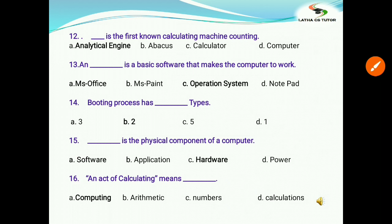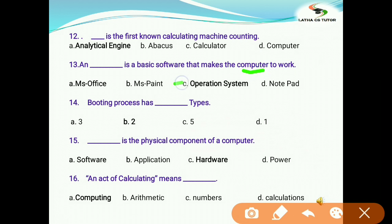Question 13: Blank is the basic software that makes the computer work. Options: a) MS Office, b) MS Paint, c) operating system, d) Notepad. The question is basic software to make the computer work, so it is operating system. It is the main software. Question 14: Booting process has how many types? The answer is 2. As we know, booting consists of cold booting and warm booting, two types. Question 15: Blank is the physical component of computer. Options: a) software, b) application, c) hardware, d) power. The correct answer is hardware. Question 16: An act of calculating means? Options: computing, arithmetic, numbers, calculations. The answer is computing.